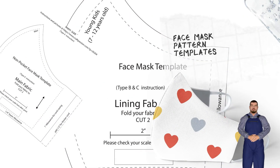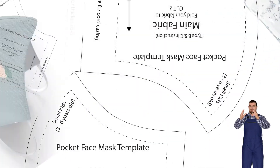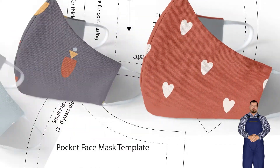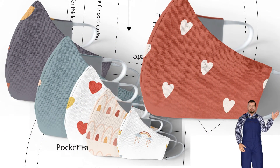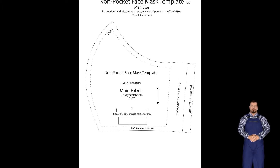4. Cricut Machine SVG files with seam allowances of 1/4 inch included for Type A, and 3/8 inch for Type B and C. Use on Type A, B, and C: men, women, teenagers, kids 7 to 12, kids 3 to 6.